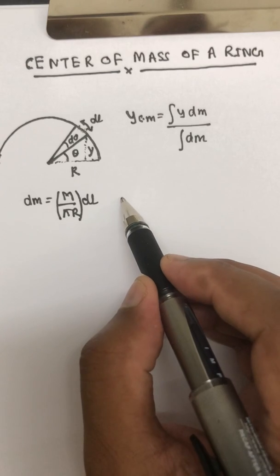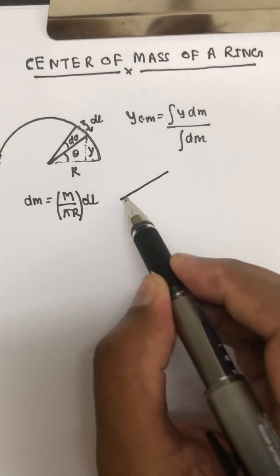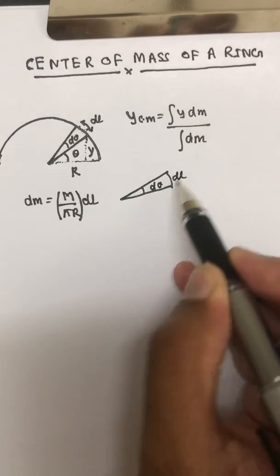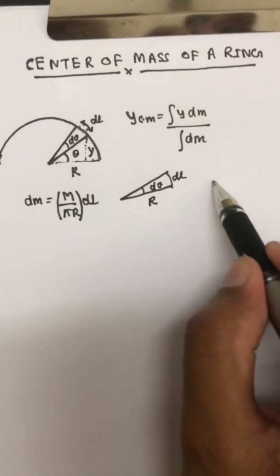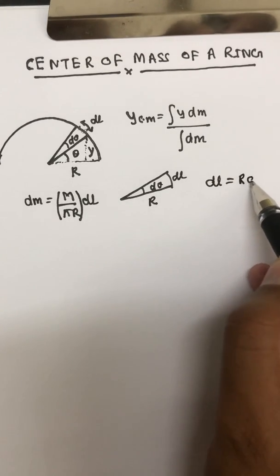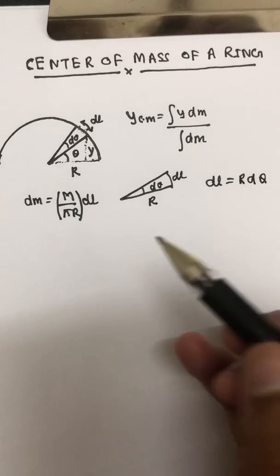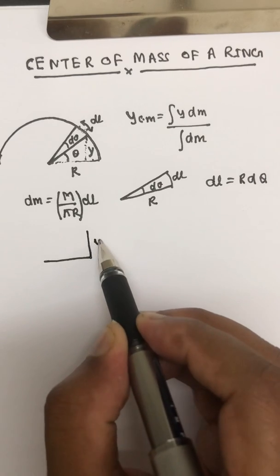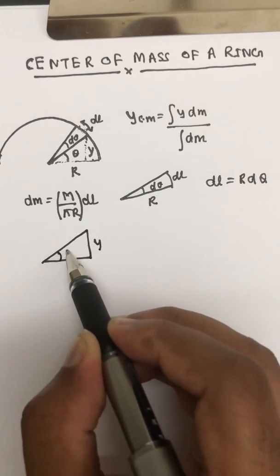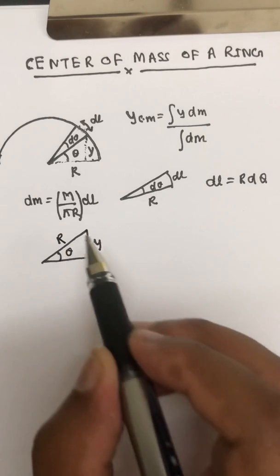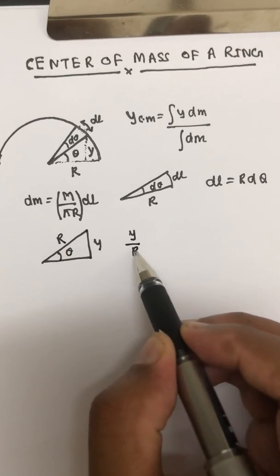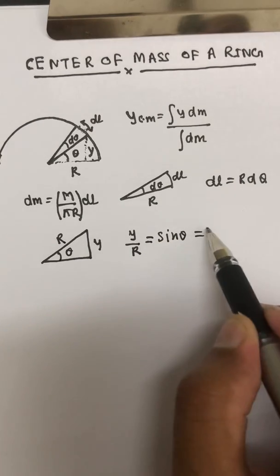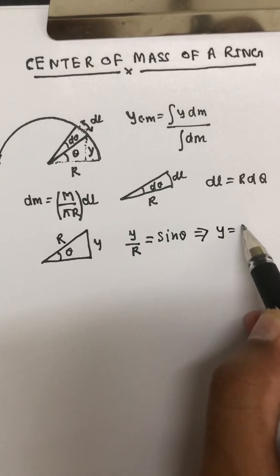In place of dl, we can write r dθ. Looking at the arc element, dl = r dθ. And looking at the triangle, with angle θ and hypotenuse r, we have y/r = sinθ, which means y = r sinθ.